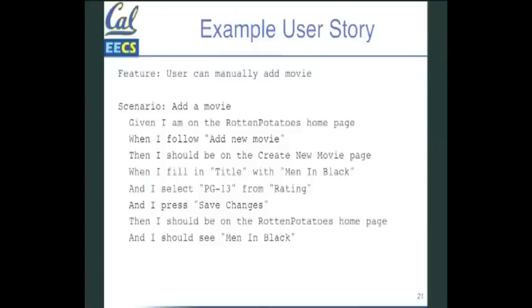So let's go specifically for the example here. So this is the format, the slight restrictions on what can be in a user story for Cucumber. And they've changed the words a little bit. So feature, there's one feature for a user story. User can manually add a movie. That's our example here.